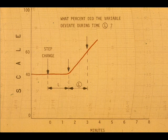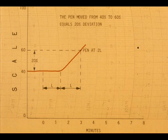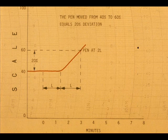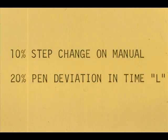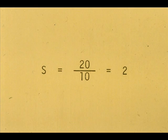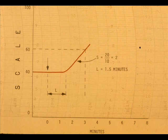Now, measure the percent of full scale the process deviated during the second time period equal to L. By projecting the slope of the curve in the time for the second L back to the scale, we get a deviation of 20% scale. We are interested in percent of deviation divided by percent of step change to get the slope S. We made a 10% output step change originally, and our deviation in time L was 20%, so S equals 20 divided by 10, which equals 2. We know S and we know time L — this is all the information we need to calculate the optimum response adjustments.